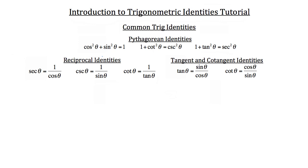These three groups here are the three most common groups that you're going to deal with. First, we have the Pythagorean identities — and these are the three Pythagorean identities. What you need to know about these identities is simply that the statement on the left is equal to the statement on the right. So for example, in the first statement here, if you had the cosine squared theta plus sine squared theta, that will always be equal to 1.